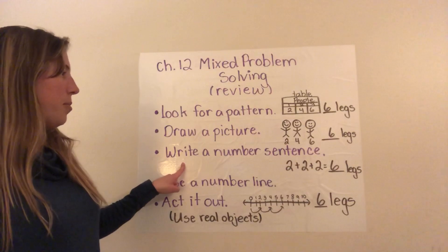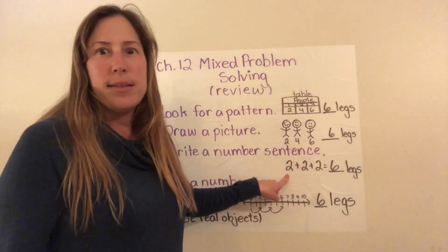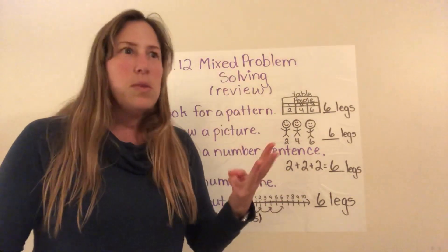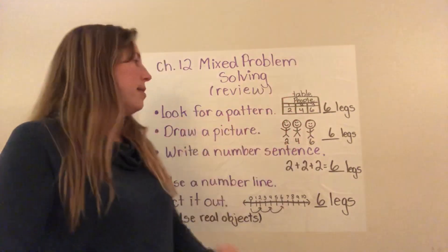Another way that she could solve this problem would be to write a number sentence. If she just knows that everybody has two legs, she could just say, well, two plus two plus two equals six. Two, two, two, six. So she could just write a number sentence showing the operations.